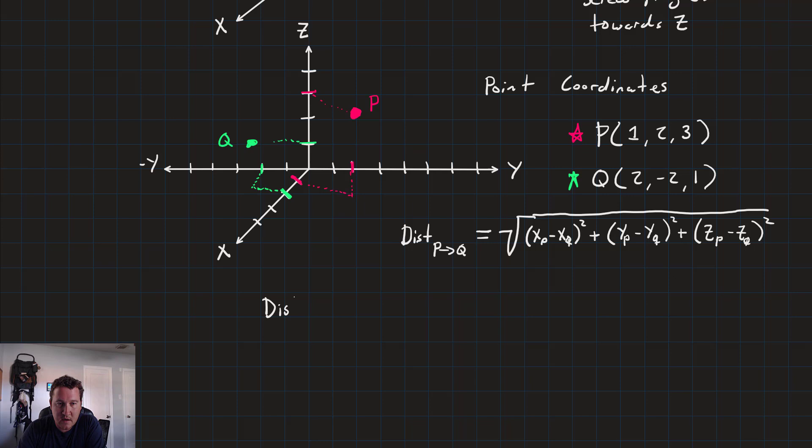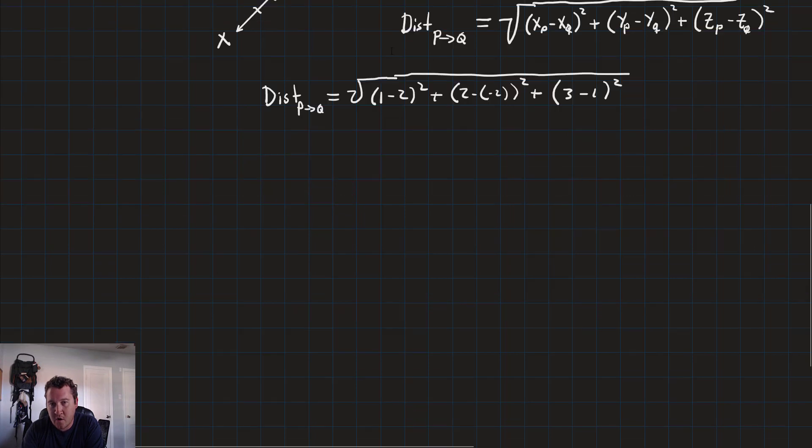So, let's go ahead and calculate this with the numbers that we have. So, the distance between p and q is equal to the square root of 1 minus 2 squared, plus, let's see, 2 minus negative 2 squared, plus 3 minus 1 squared. All of that is square rooted. Let's start to evaluate that.